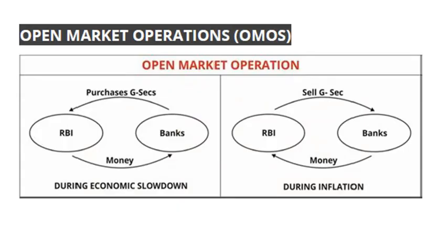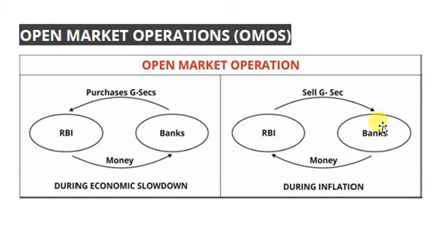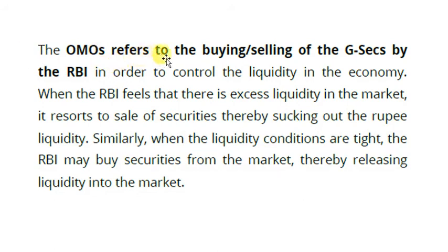Open Market Operations (OMO) involve RBI and banks. During economic slowdown, RBI purchases government securities from banks, giving banks money to lend and increasing liquidity. During high inflation or excess liquidity, RBI sells G-Secs to banks, thereby sucking up liquidity. OMOs refer to the buying and selling of government securities by RBI to control liquidity in the economy — buying securities releases liquidity, while selling securities absorbs it.